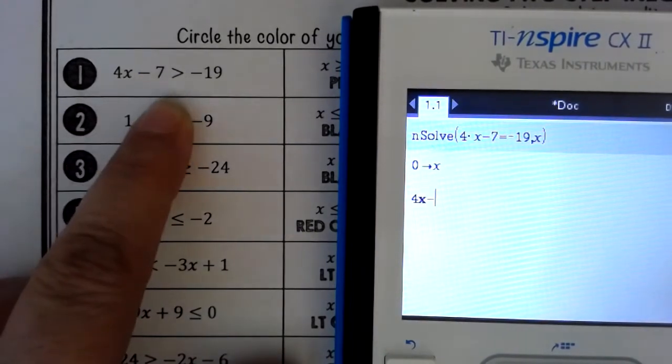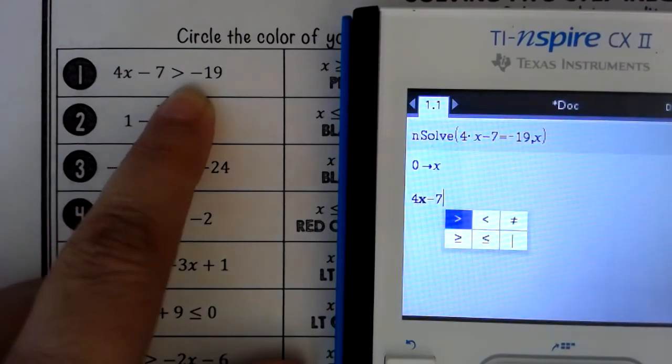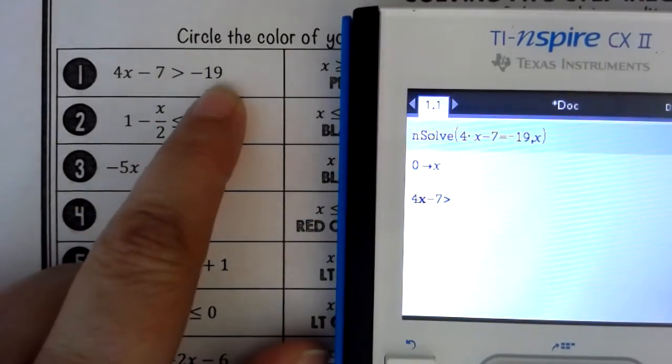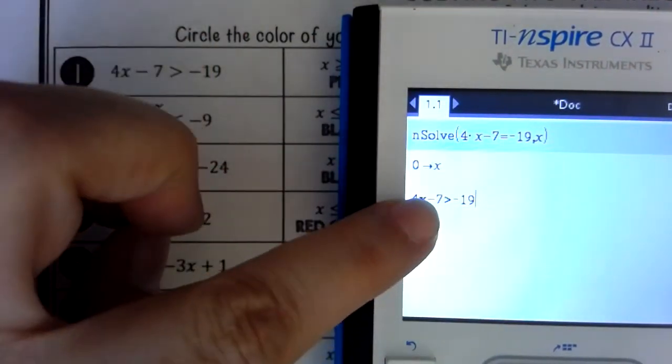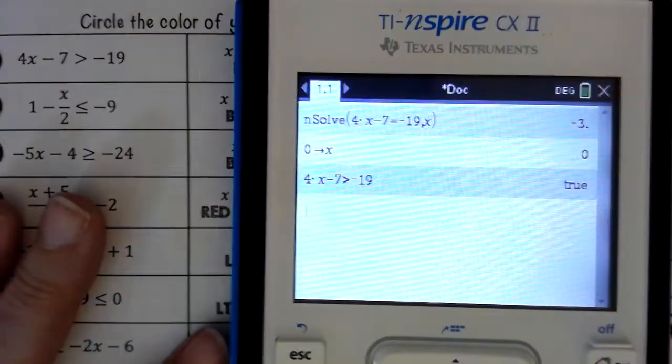And now we're going to type in the original equation that they gave us just to find out if it's a true or false statement. To get the greater than sign, you push control, equals, pick the greater than, and then negative 19. Since you've told X to be 0, it's going to fill in 0.